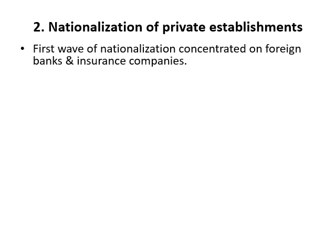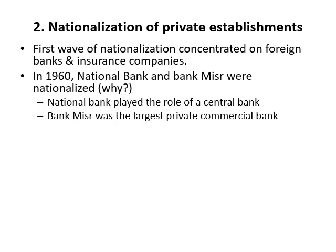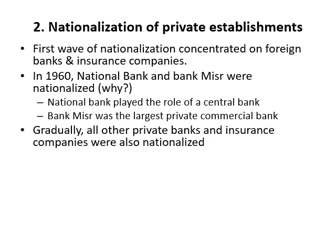The second point in our chapter is about nationalization of private establishments. There was a first wave of nationalization concentrated on foreign banks and insurance companies in 1960. The National Bank and Bank Misr were nationalized, as Egypt did not yet have a central bank, so the National Bank played that role. Bank Misr was the largest private commercial bank. All other private banks and insurance companies were also nationalized.